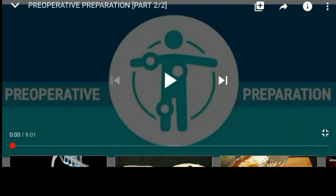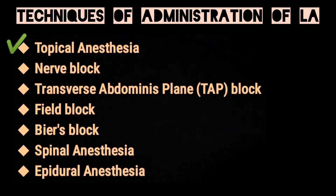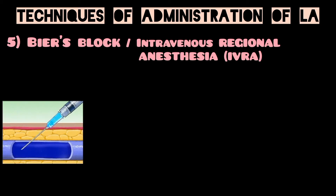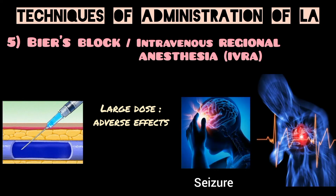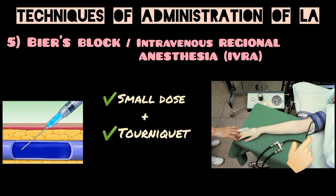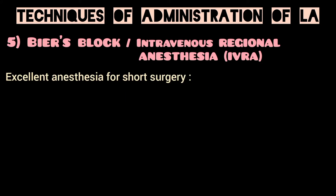In the previous video we did topical anesthesia, nerve block, TAP block, and field block. Here we are going to start with Bier's block, which is also known as intravenous regional anesthesia. In this technique the anesthesia is administered intravenously, so we have to be very careful with the dose of the drug, as a large dose can lead to toxicity and cause adverse effects like seizures and cardiac arrest. A tourniquet is placed at the site of administration to prevent the drug from entering systemic circulation.